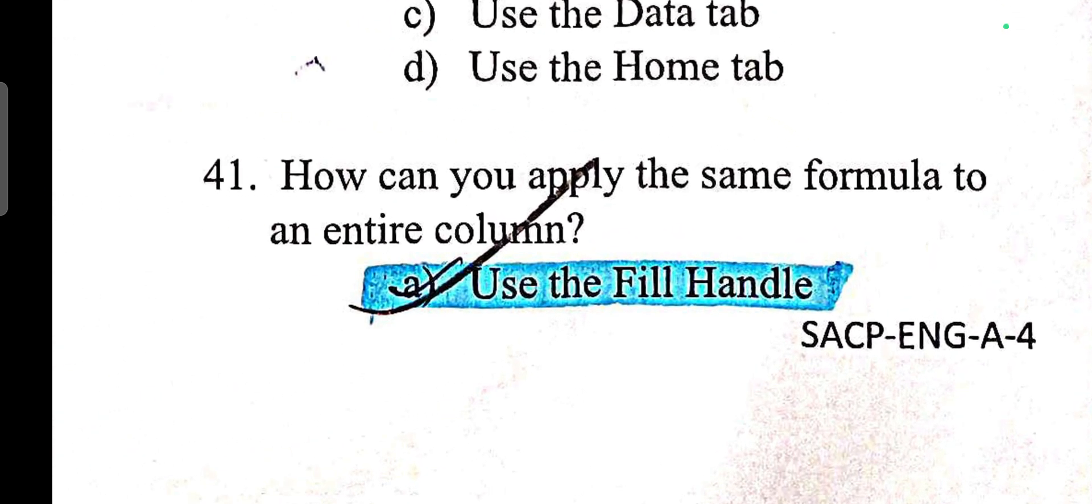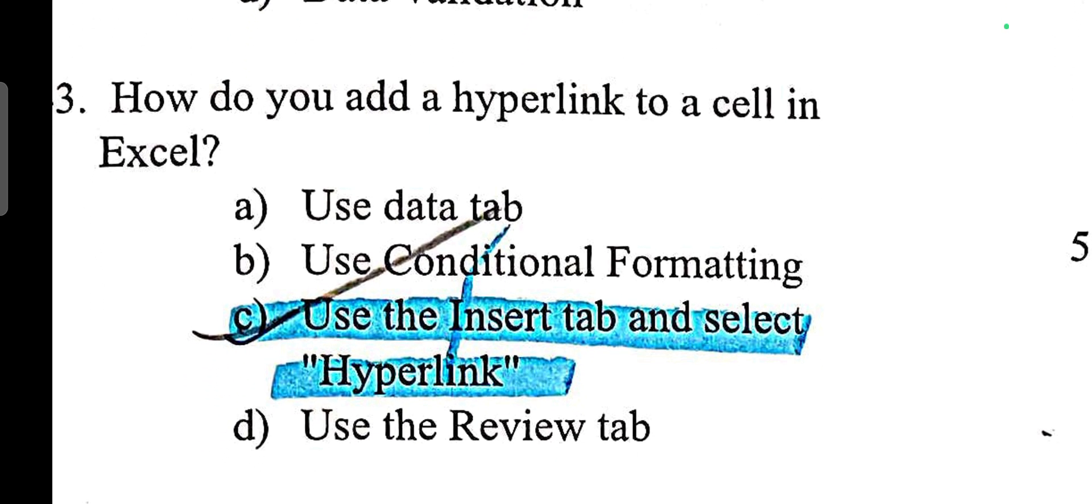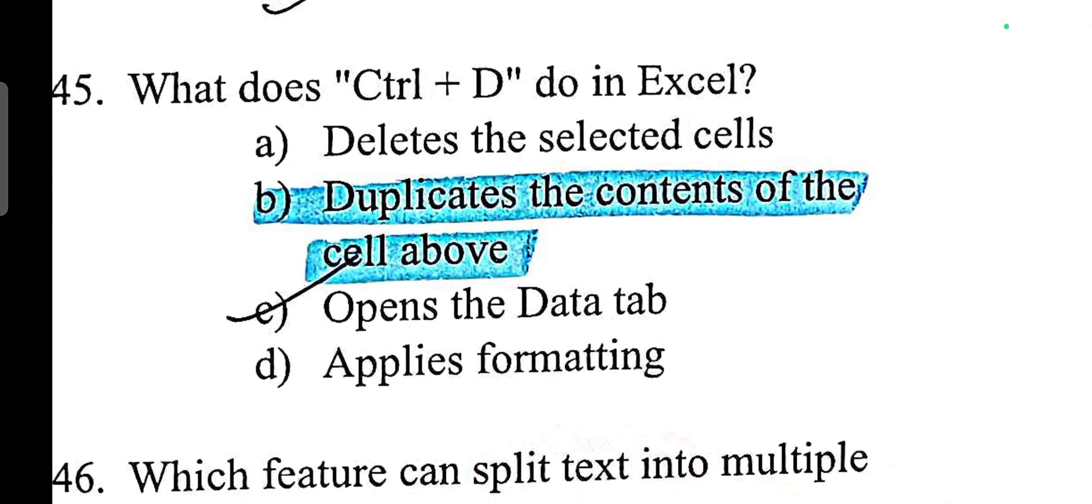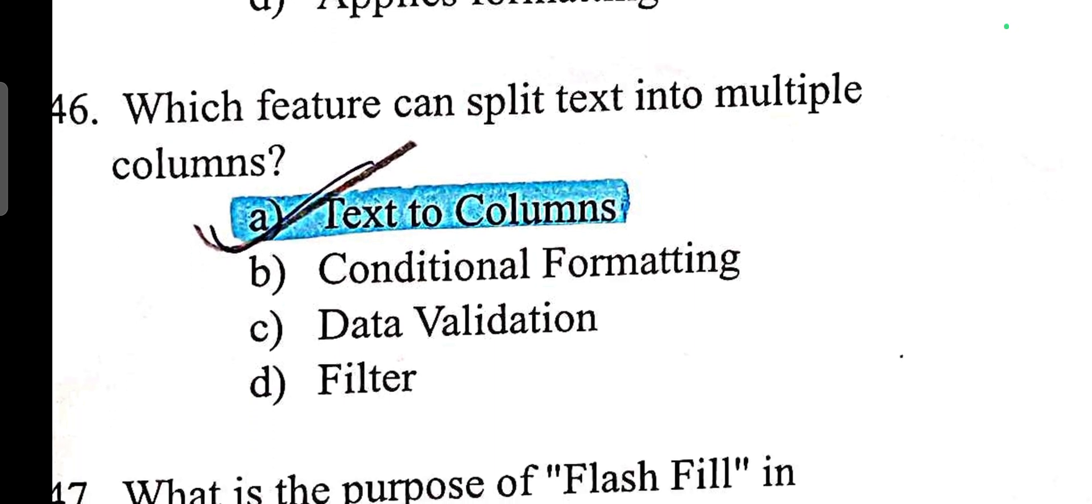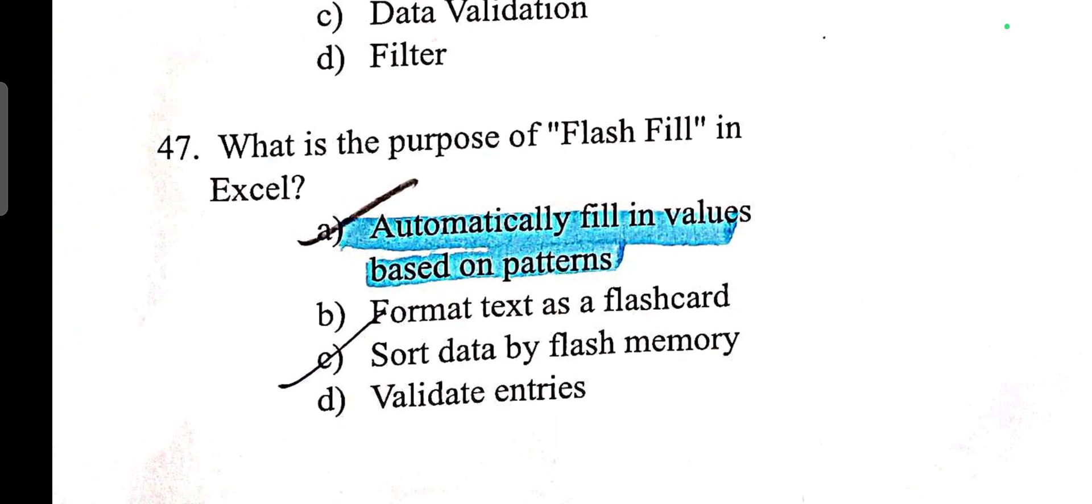How can you apply the same formula to an entire column? Which feature allows you to group, summarize data and report? Pivot table. How do you add a hyperlink to a cell in Excel? Use the insert tab and select hyperlink. How do you quickly apply a pre-designed style to a table? Use table styles under the home tab. Control D duplicates the contents of the cell above. Which feature can split text into multiple columns? Text to columns. What is the purpose of flash fill? Automatically fill in values based on patterns.